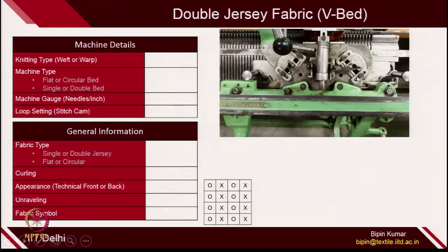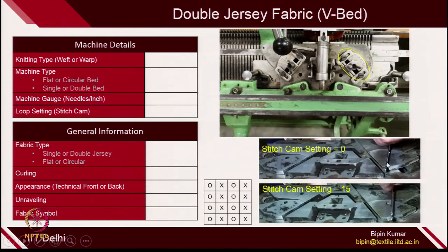Here, the stitch cam is denoted with this circle — this part is the stitch cam. If you rotate or if you slide this stitch cam across this slot, you are basically changing the position of the stitch cam. This is the stitch cam; you can see when this stitch cam is at 0 position. This is the 0 position — this is at the top most. So the needle will not descend too much. In this case, the loop length will be too low, so the size of the loop will be minimum.